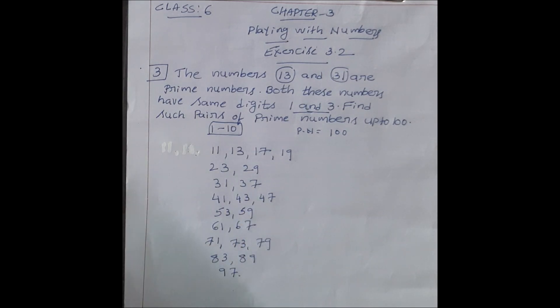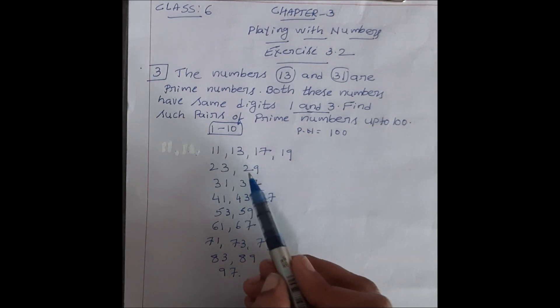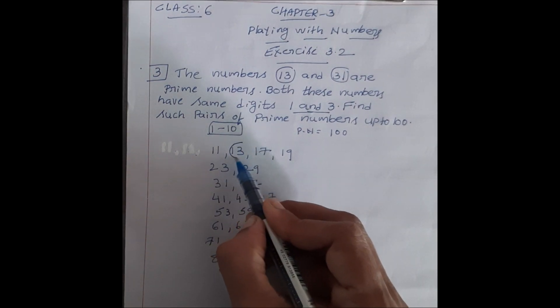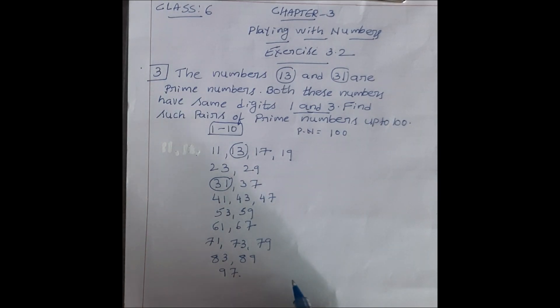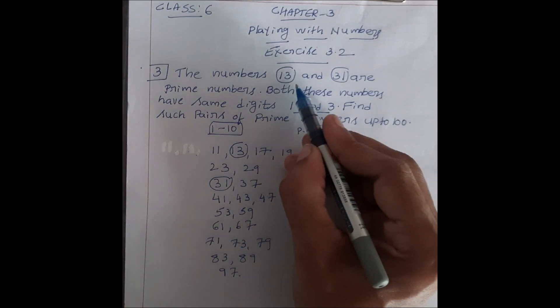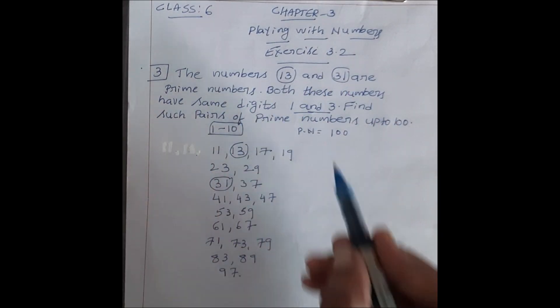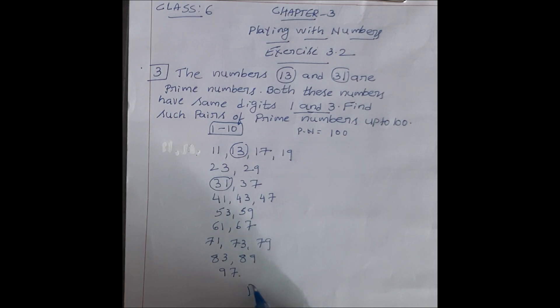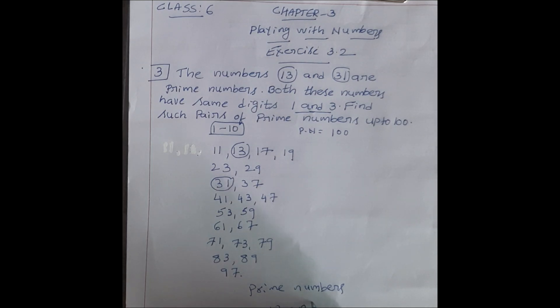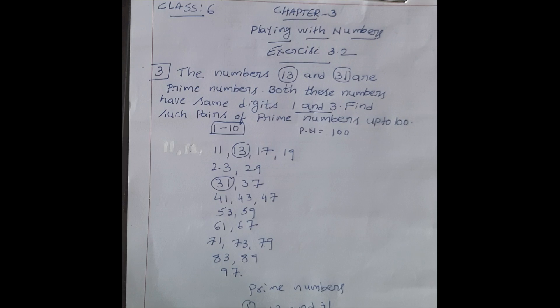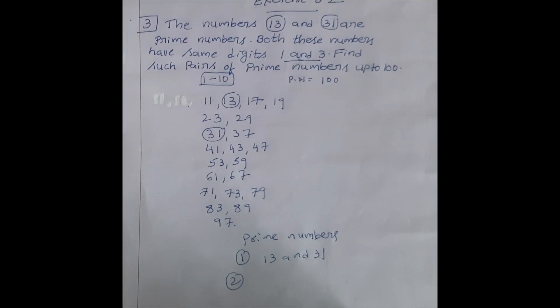Abhi next pair banana hai. 13, 1, 3, 3, 1. Iska to pair bana diya hai, 13 and 31 are prime numbers. Likhenge idhar prime numbers, 13 and 31. Iska ek pair ho gaya. Abhi next number count kaun kaun sa hai, dekhenge.